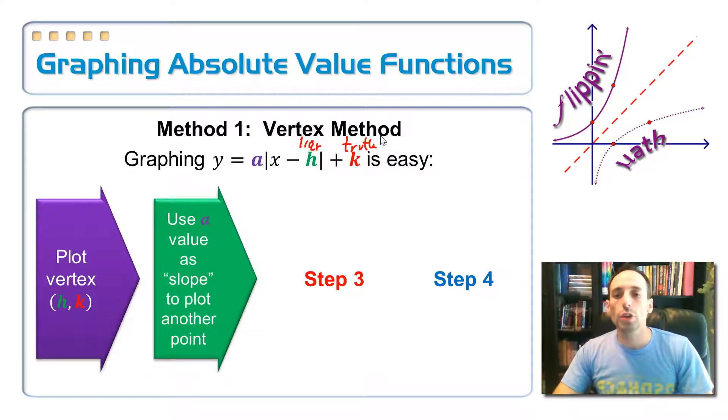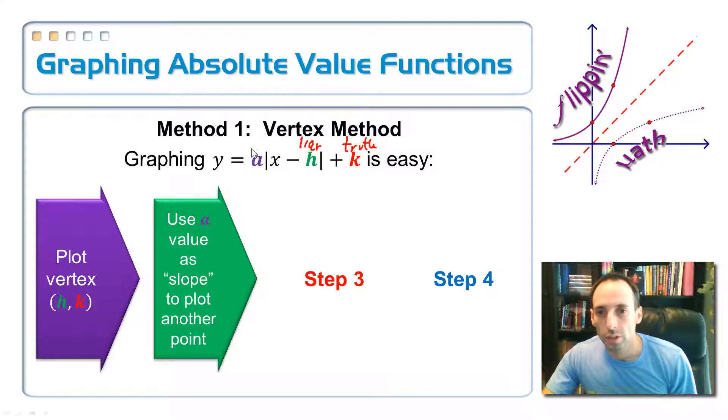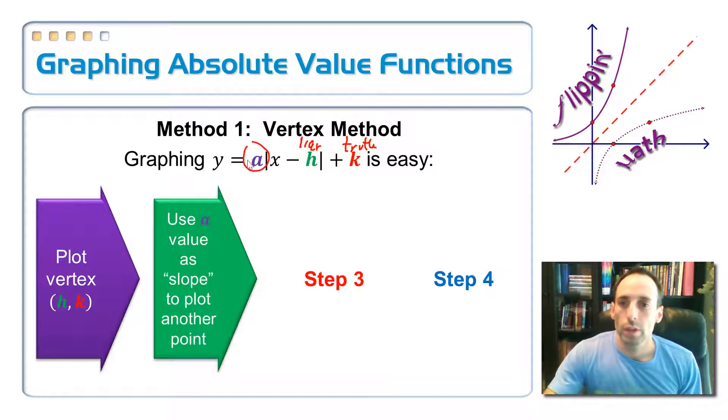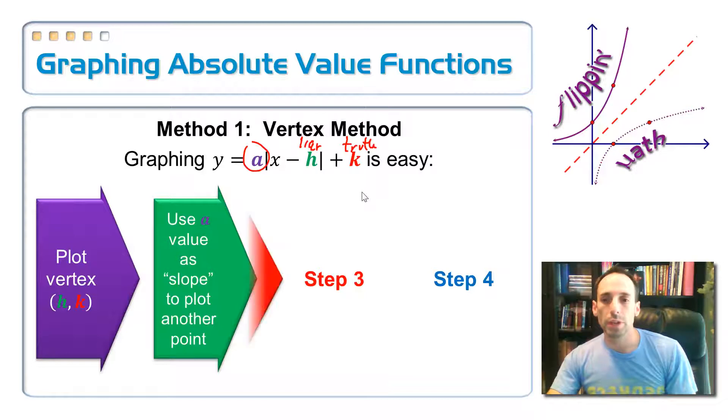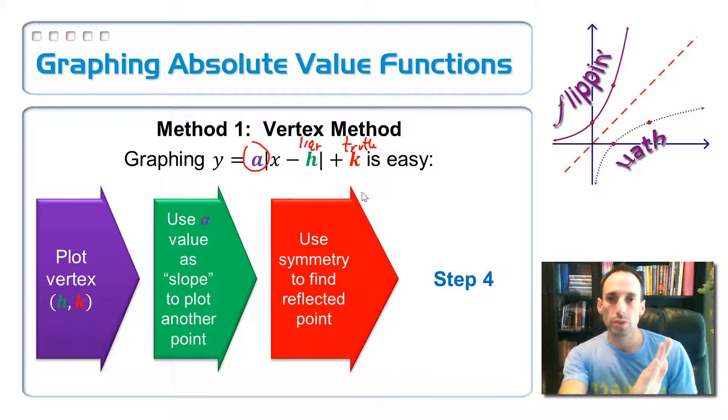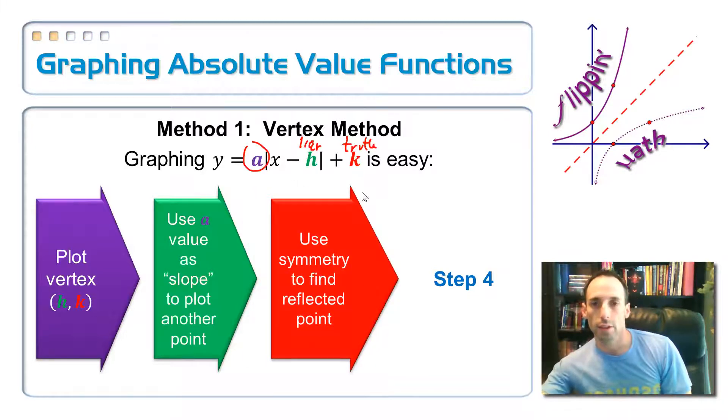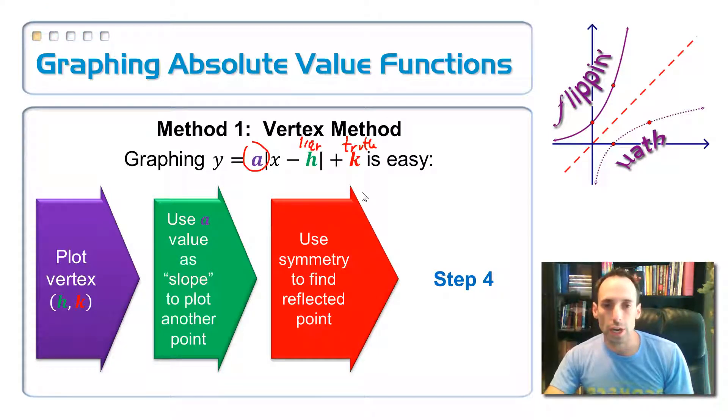Now step two, you're going to use the a value that's up front here. Use this a value as a slope. And that's going to plot one side of your graph. If it's two, that means you're going to go up two and right one. That's going to give you one side of the graph. And step three, to get the other side, you're just going to use symmetry. You reflect that across to get the other side of that V shape.